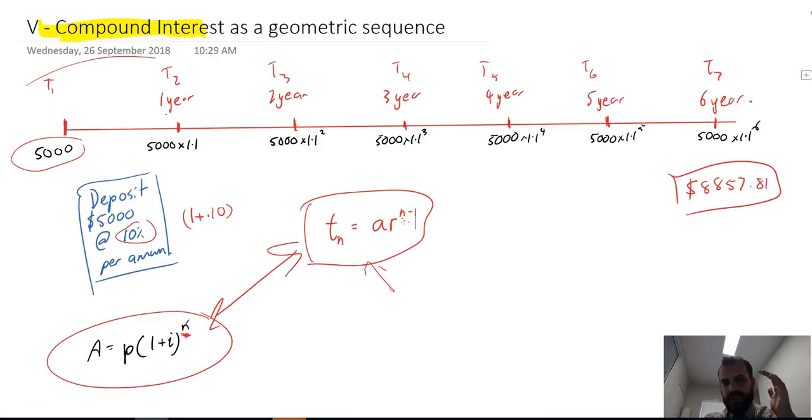So in our last video, I showed you that geometric sequence is just compound interest. You put money in the bank and you wait six years, and then at the end, you can withdraw more money. It's great.